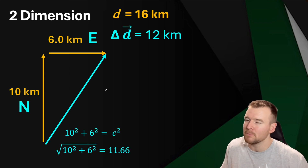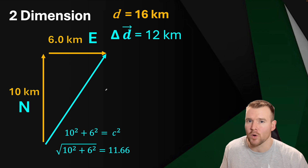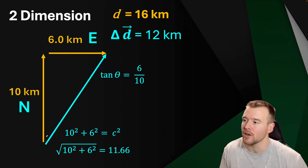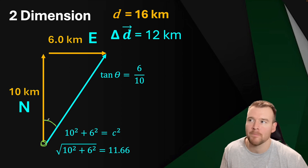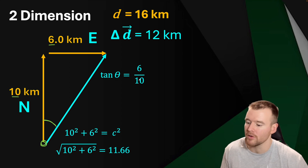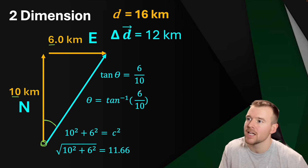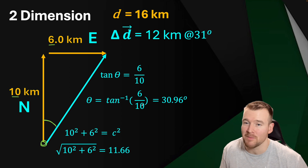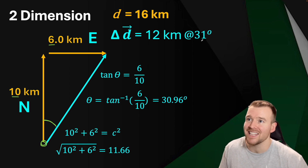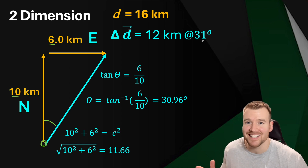We're not quite done yet because we said 12 kilometers, but we have to include the direction. We could say northeast, but in Physics 20 we want to be more specific, so we calculate the angle. Starting from where the person began, the opposite side is 6 and the adjacent is 10, so we use tan⁻¹(6/10) and get an angle of 30.96, which rounds to 31 degrees. We still need to describe that angle fully.